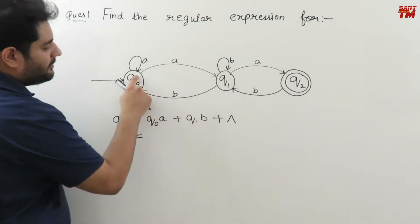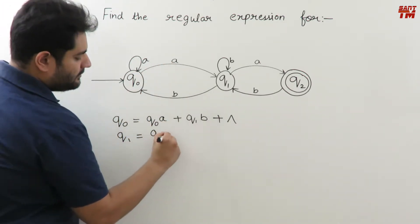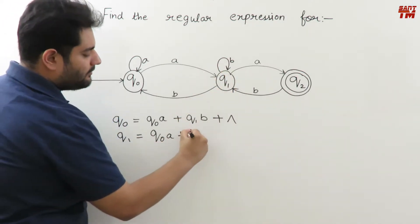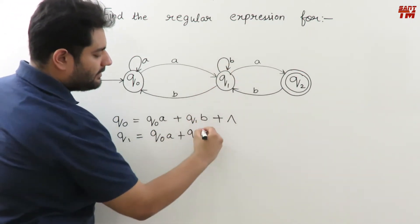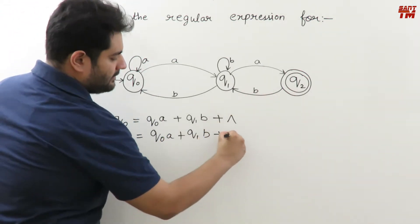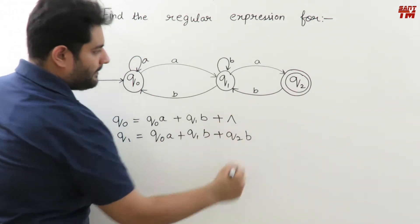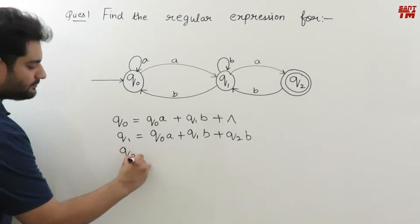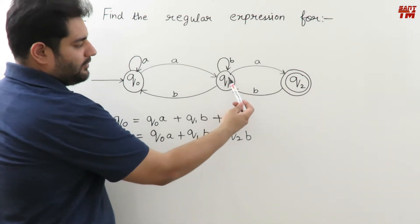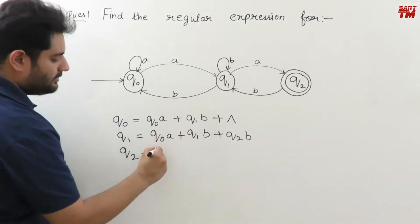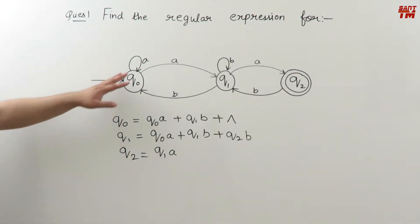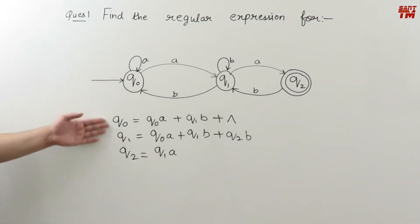State equation for q1: q1 has one incoming edge from q0 with 'a', one from q1 itself with 'b', and one from q2 with 'b'. So q1 = q0·a + q1·b + q2·b. State equation for q2: q2 has one incoming edge from q1 with 'a'. So q2 = q1·a. These are the state equations for q0, q1, and q2.